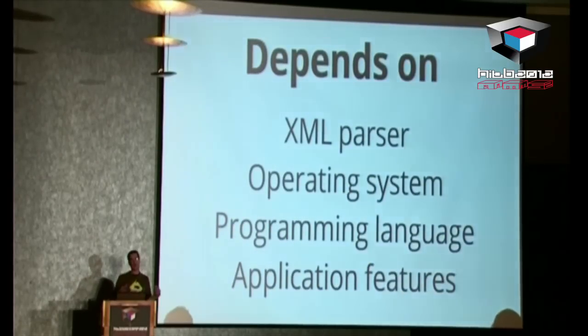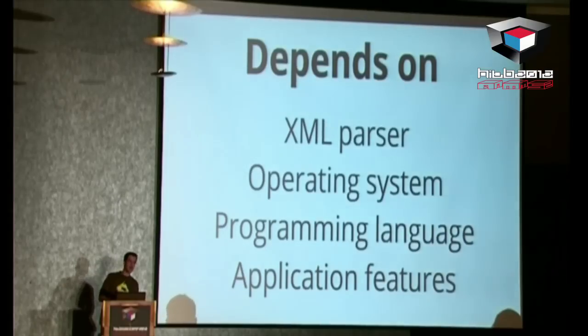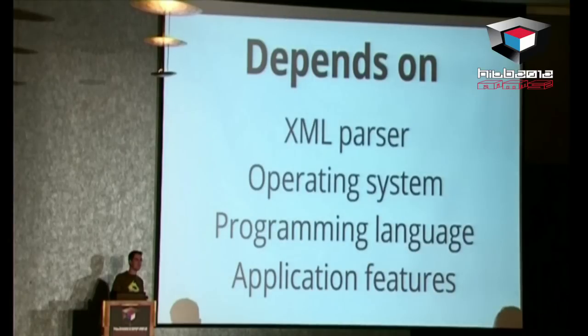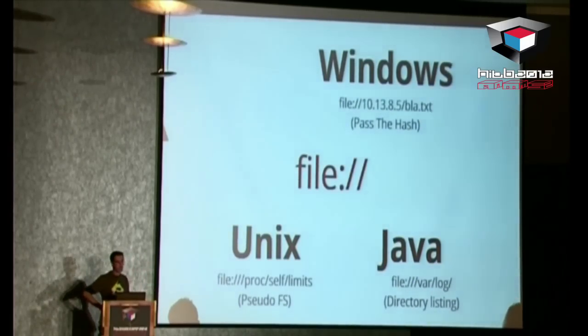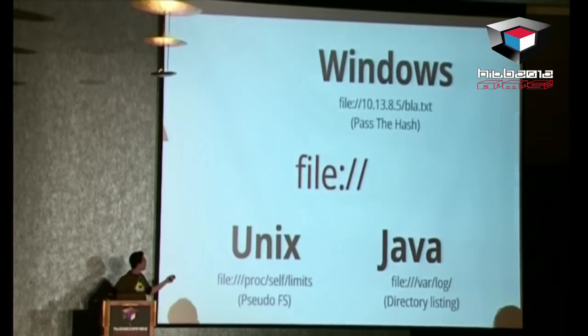Everything depends on the context of execution — the XML parser itself, the operating system (under Windows you have specific tricks), the programming language (most XalanJ XSLT parsers allow executing Java code), and the application features which could add additional URL handlers. For the file URL handler: under UNIX you can access the pseudo filesystem like /proc, which is useful for exploitation of memory corruption bugs. Pass the hash under Windows. Directory listing under Java. In PHP there are a lot of special URL handlers.